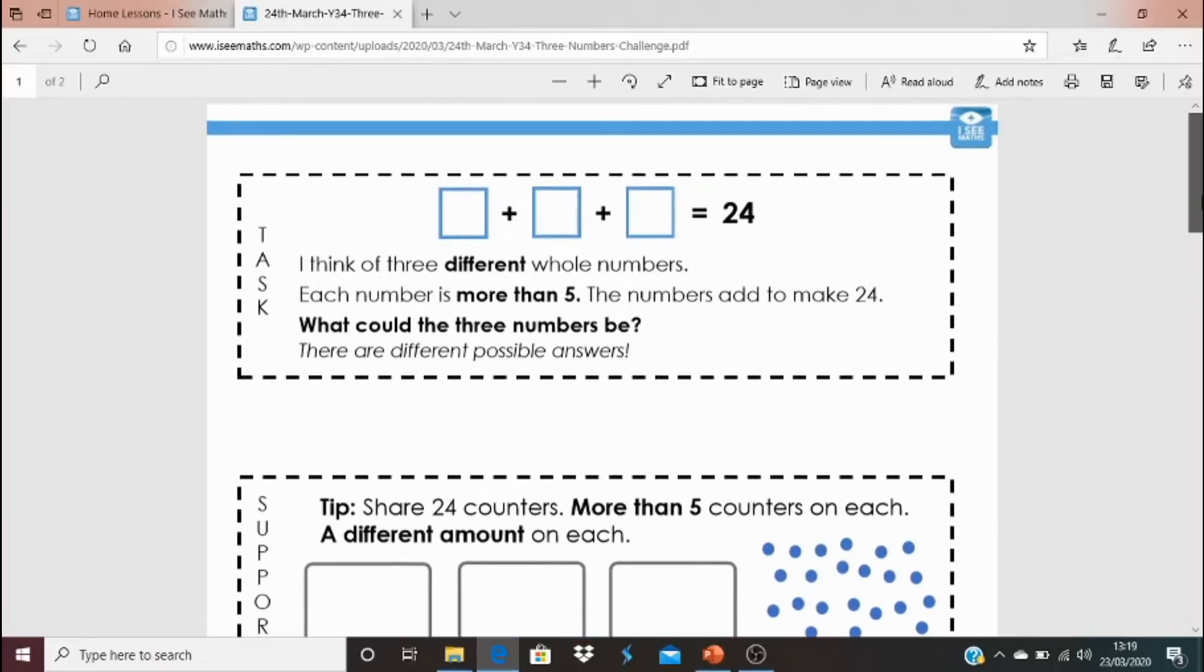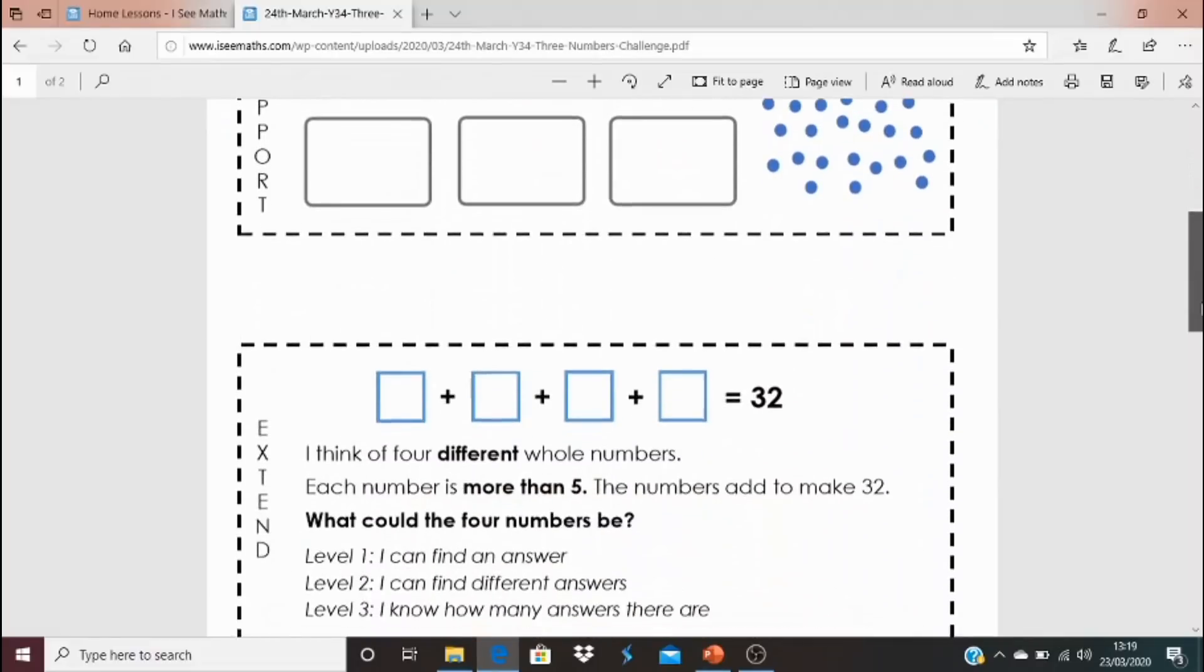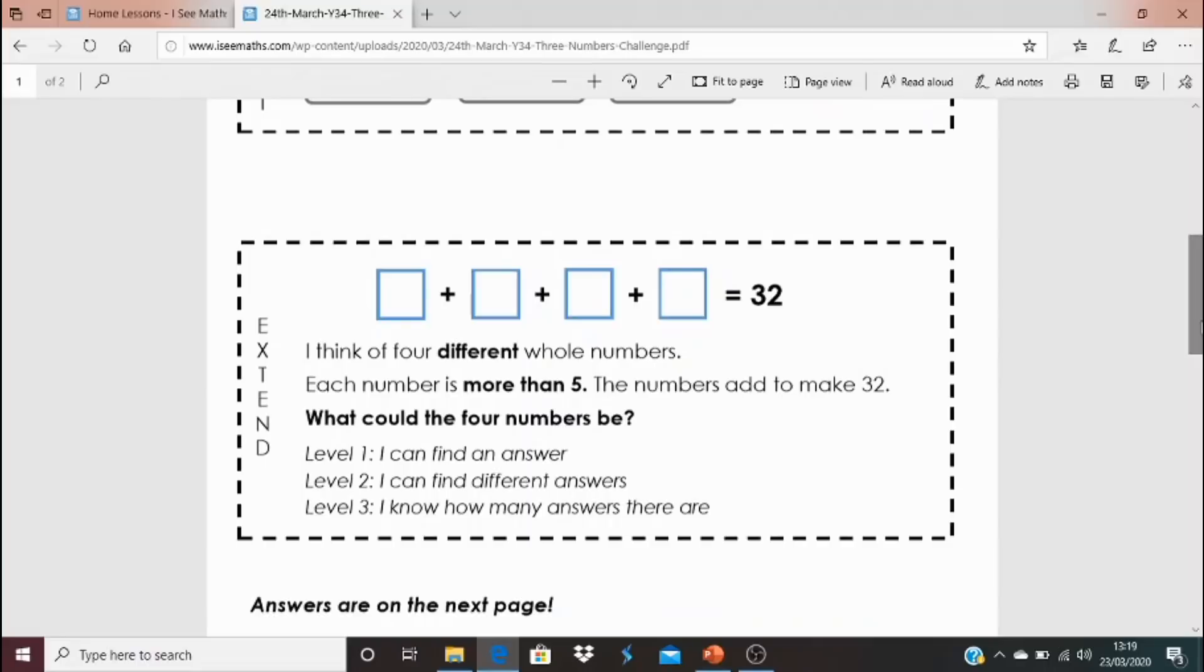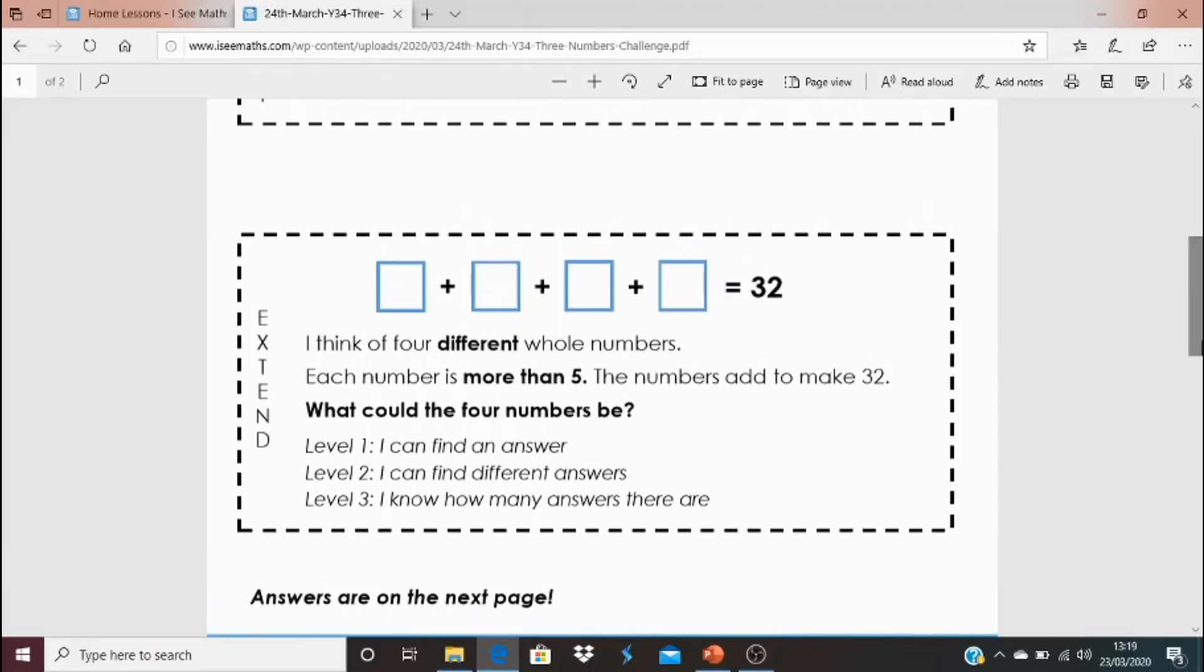Equally if you think that you've answered this challenge and you want another opportunity to deepen your understanding or even you just want to start from this task you could have a go at the extend task. These are some of my favorite challenges from IC problem solving. For this one it's a three level question. Level one is you can find an answer. Level two you can find different answers but level three you've got to be able to say how many answers there are. Have you found them all? How do you know that they cannot be anymore? The answers are just underneath there and good luck with these challenges.